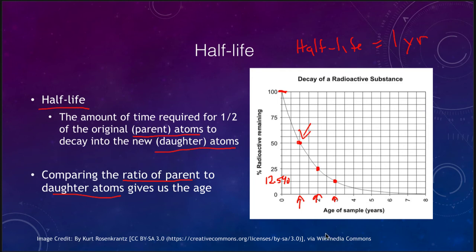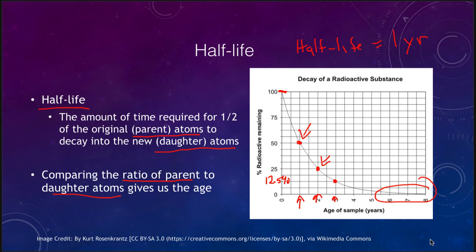We can compare the ratio of parent to daughter atoms to discover the age. If they were equal, we would know it is one half-life old. If you have three times the number of daughter atoms as parent atoms, then it is two half-lives old, and so on. This works very well where the curve is changing quickly, but at the far end it doesn't work well — it's very hard to distinguish between six, seven, and eight half-lives because the ratios become very similar. That's why we look for minerals whose half-lives are such that several half-lives would be approximately the age of the rock.